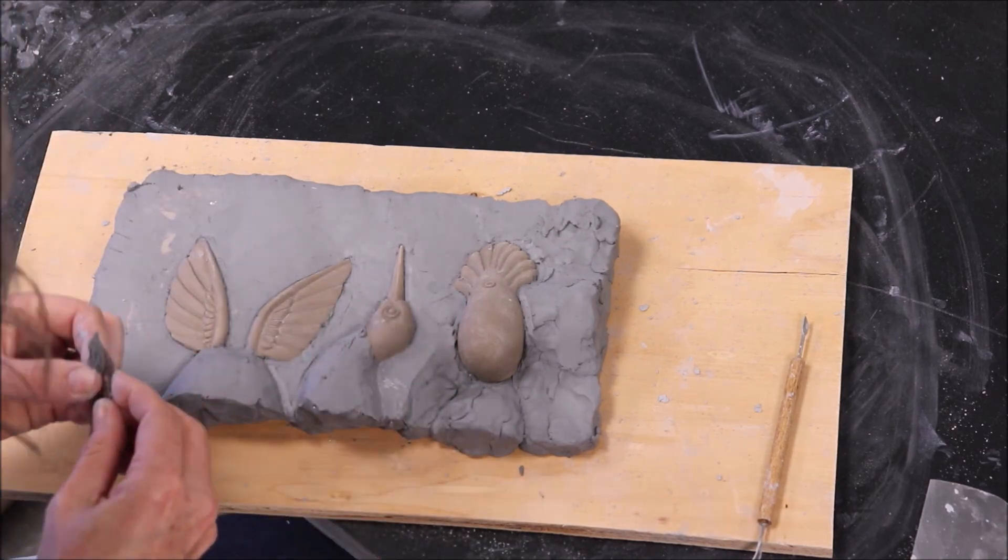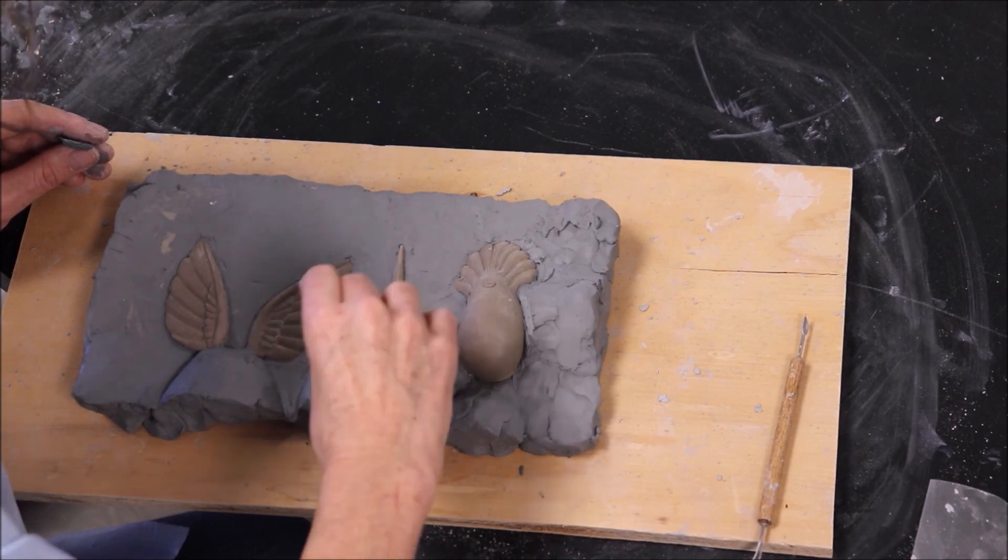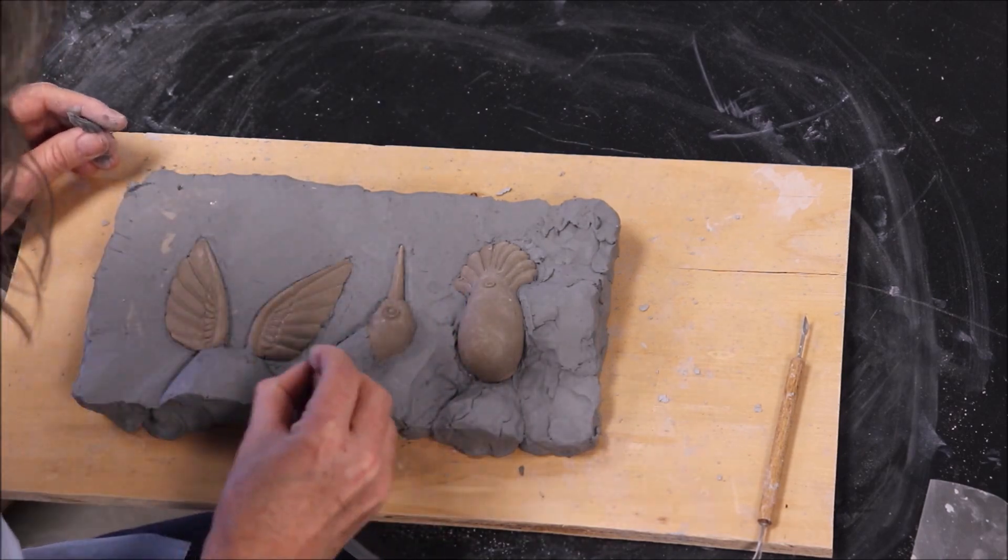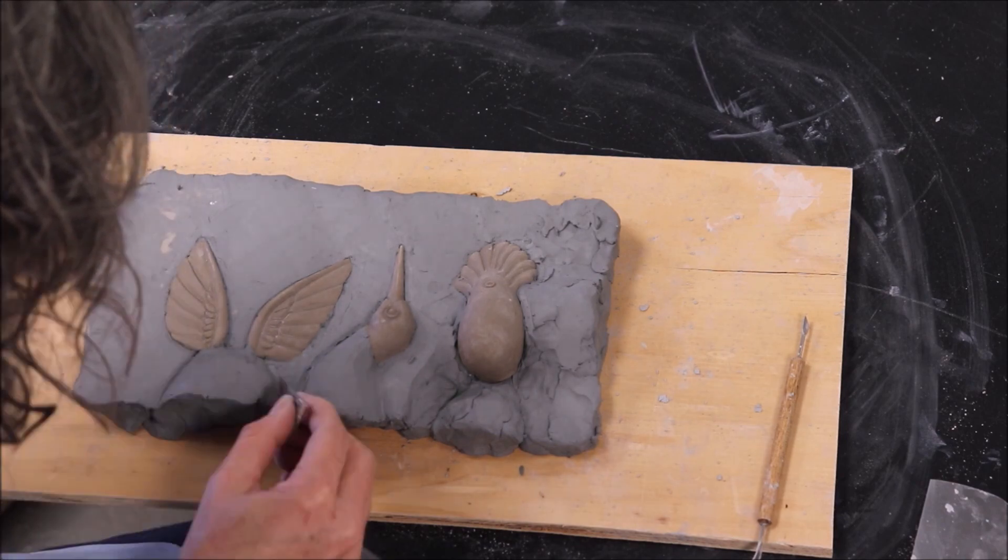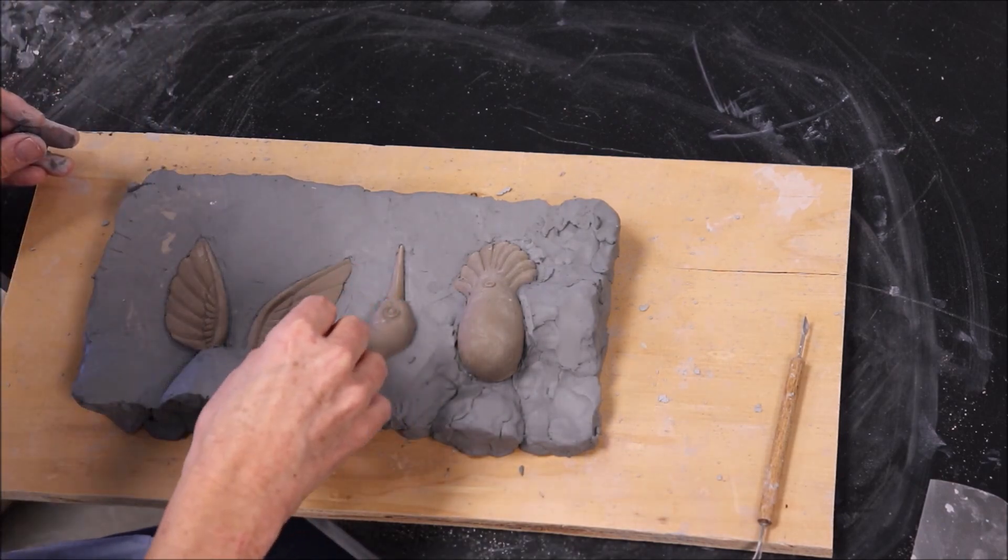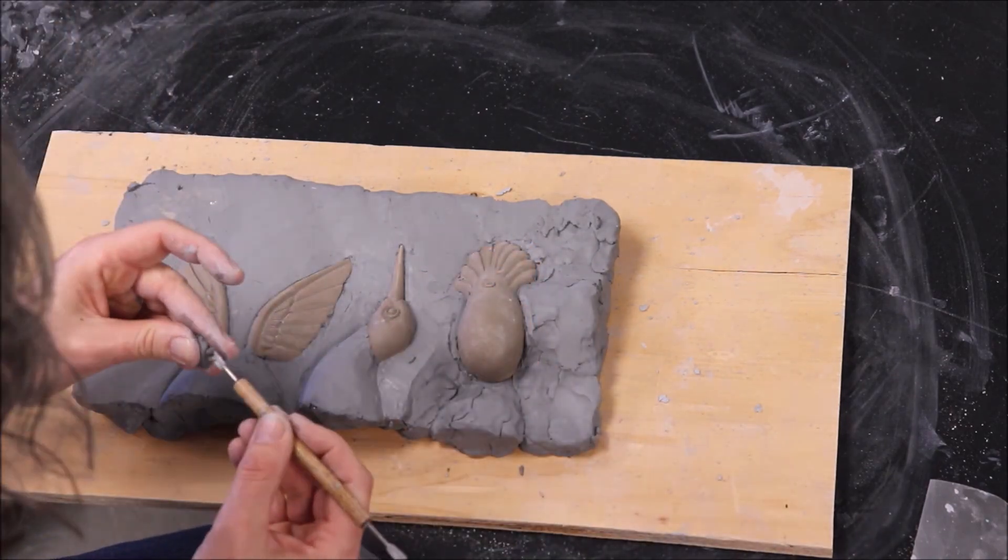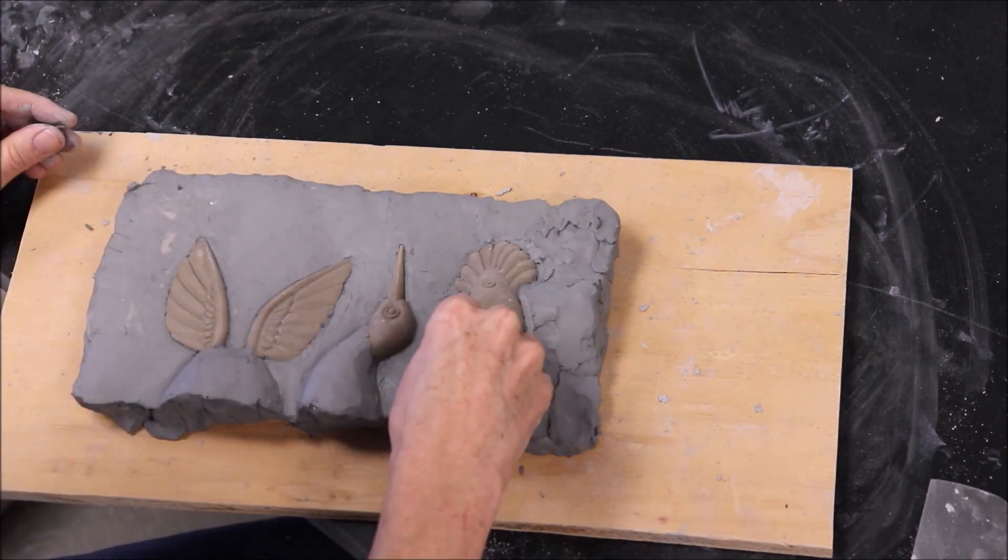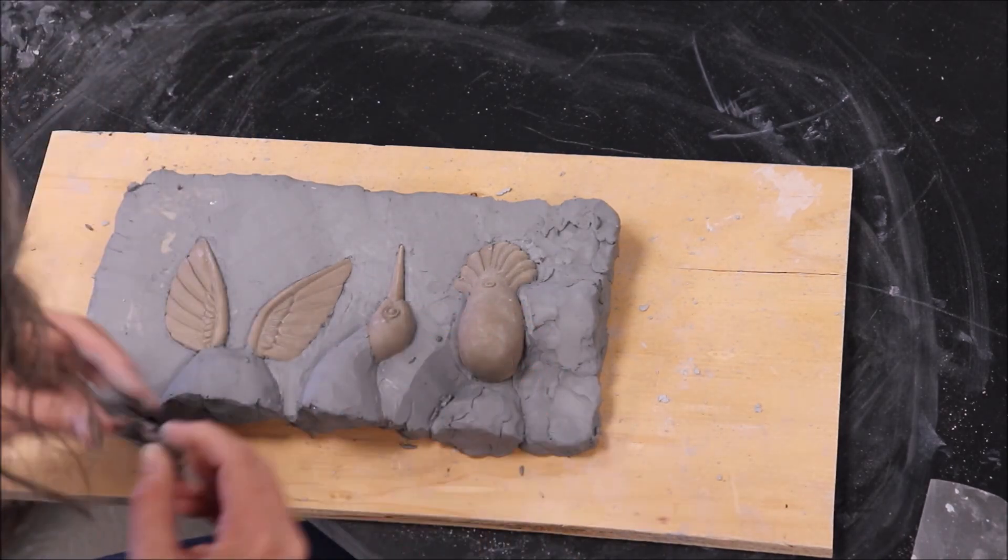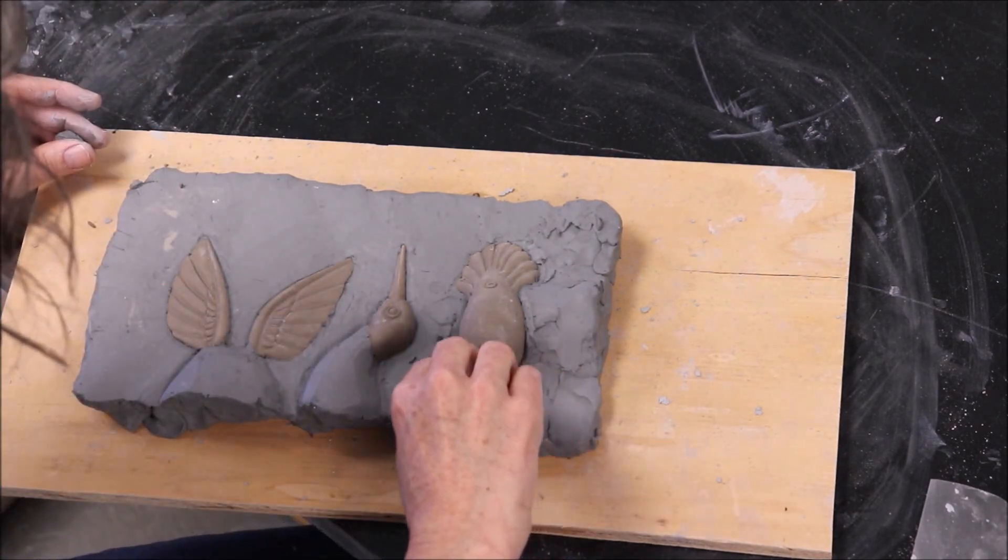Basically, if you don't get that nice 90 degree angle, it's really easy to chip your mold, especially as you use it time and time again. Then you'll end up with a much larger seam, which takes more time to clean up. Essentially, if your seam is really large, you're removing quite a bit of clay there and creating a thin spot in the clay piece. You really want to make sure you're creating a nice clean 90 degree angle.